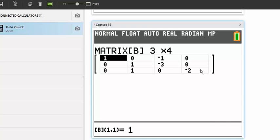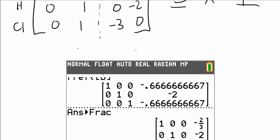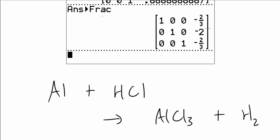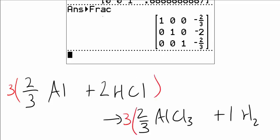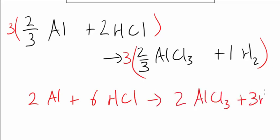Now run the reduced row echelon form again for this matrix, then convert to fractions. The result tells us the answer is 2 thirds, 2, 2 thirds, and 1 for the last term. Since we don't want fractions, multiply through by 3 to eliminate the denominator — multiply everything on both sides. You get 2 aluminum plus 6 HCl producing 2 AlCl3 plus 3 H2. And that's the answer.